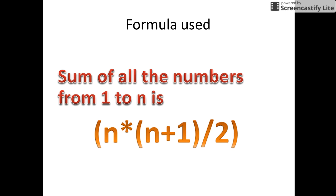We all know that the sum of all the numbers from 1 to n is given by n into n plus 1 by 2. That is, the sum of n natural numbers is n(n+1)/2.